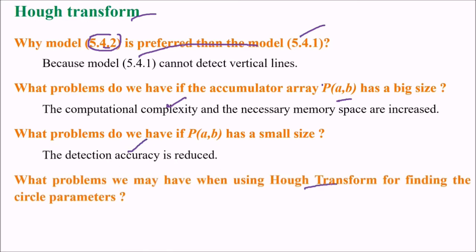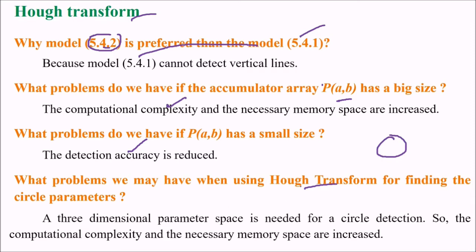What problems do we have when using Hough transform to find the circle parameters? A 3D parameter space is needed for circle detection. The computational complexity in terms of time and space will increase.